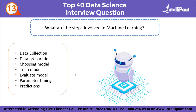What are the steps involved in machine learning? The first step is data collection — defining the problem and assembling a dataset. Then data preparation. Next, choose and train the model. After that, evaluate the model by choosing a measure of success and deciding on an evaluation protocol. Then parameter tuning — developing a model that overfits, regularizing it, and tuning parameters. Finally, making predictions.